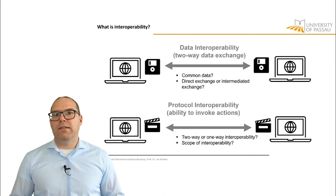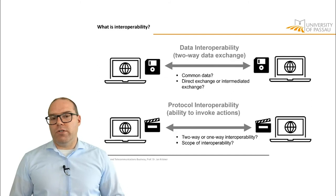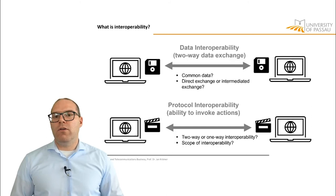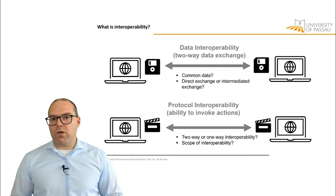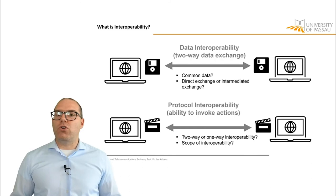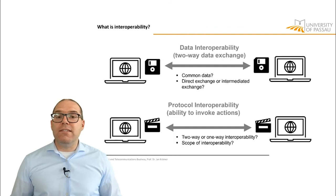In protocol interoperability, it is possible to actually invoke functions from one content and service provider at another content and service provider — so you can invoke an action such as posting on a timeline or sending a video. The key questions here are how that interoperability actually works: is it two-way? Can you invoke the same functions from one CSP at the other end and vice versa, or are there different functionalities that can be invoked? And what precisely is the scope of interoperability — how many and which actions can you invoke?